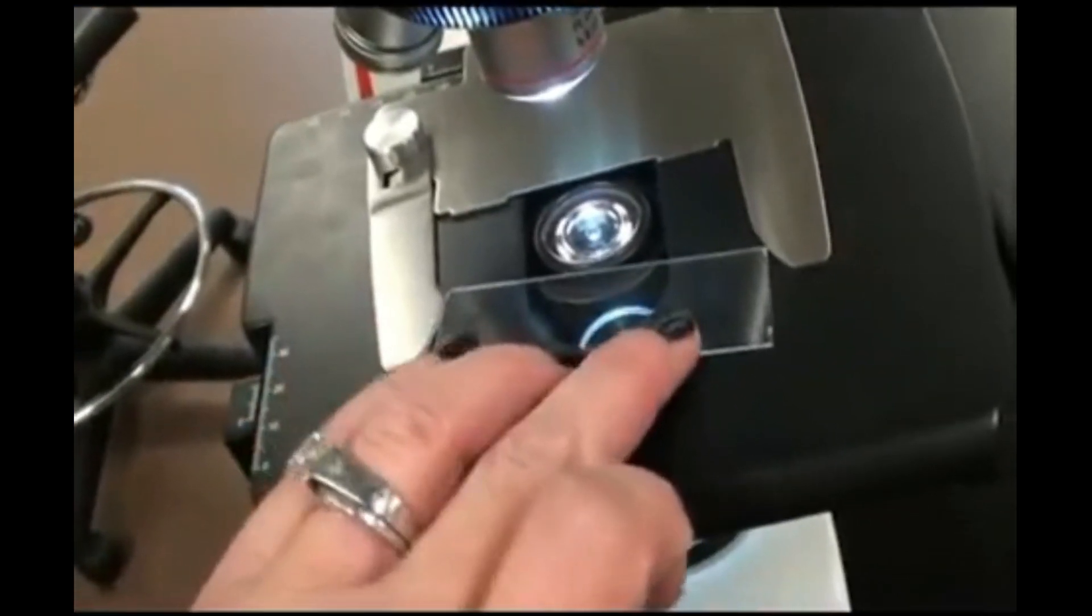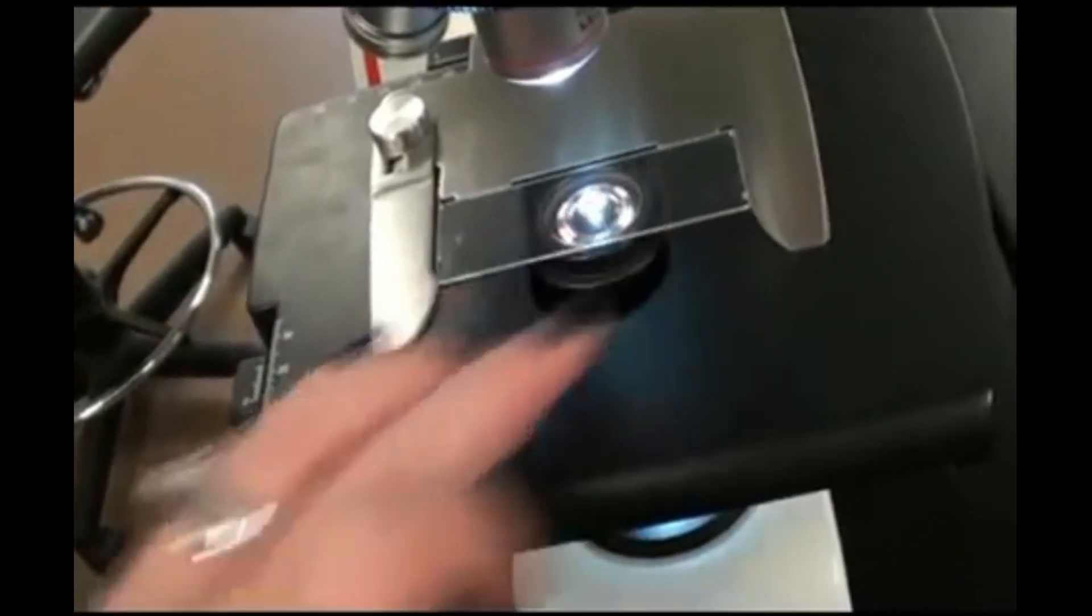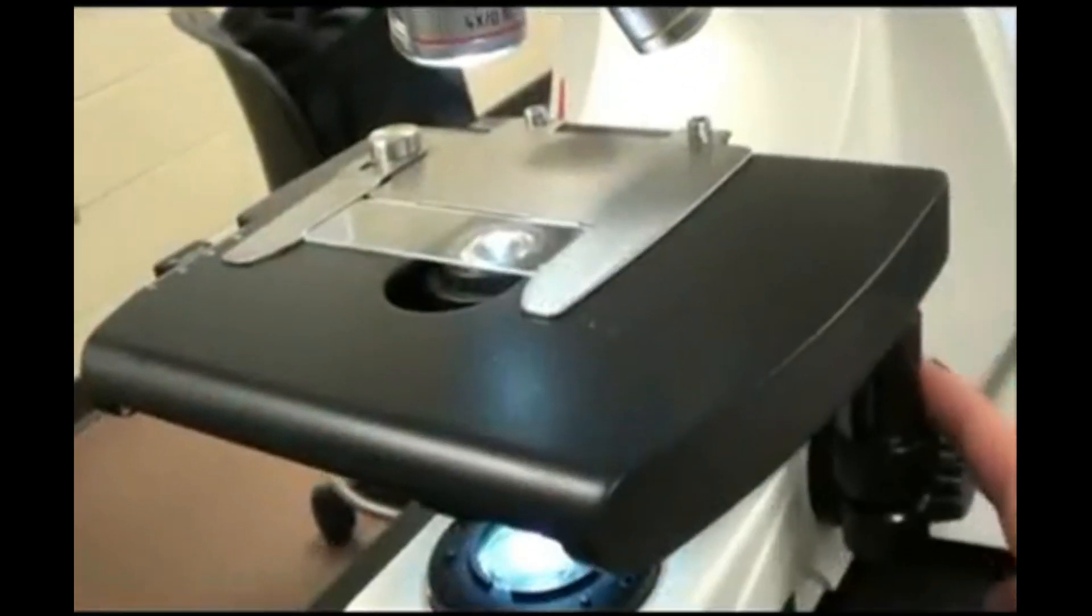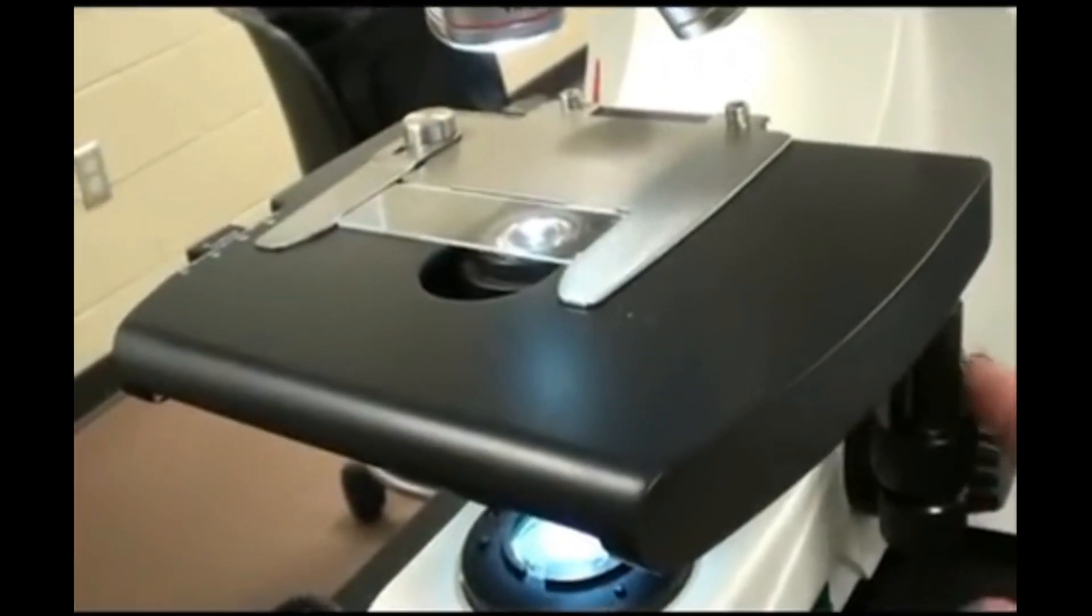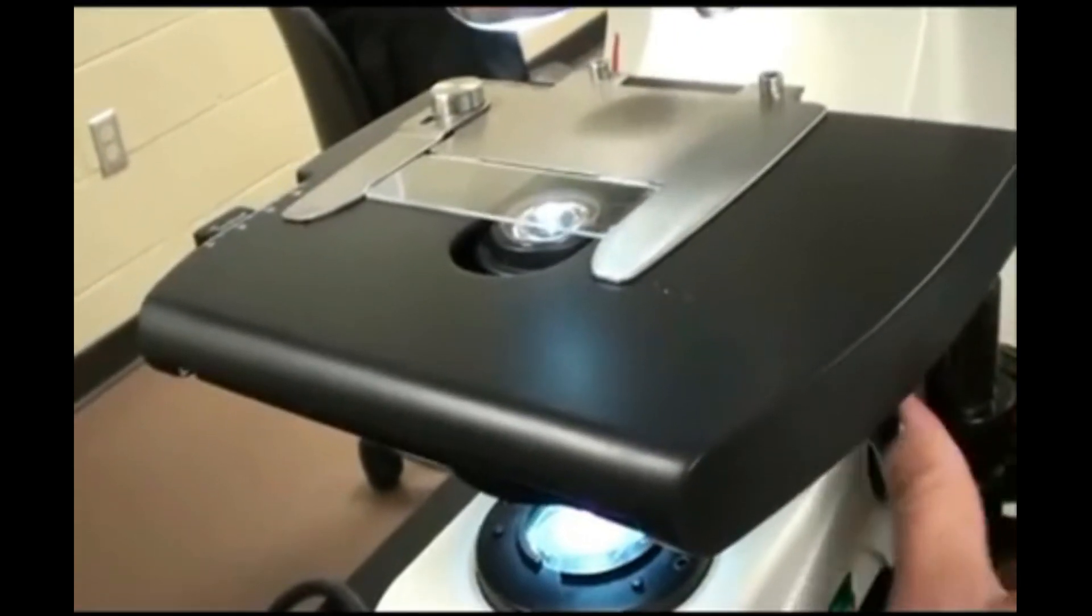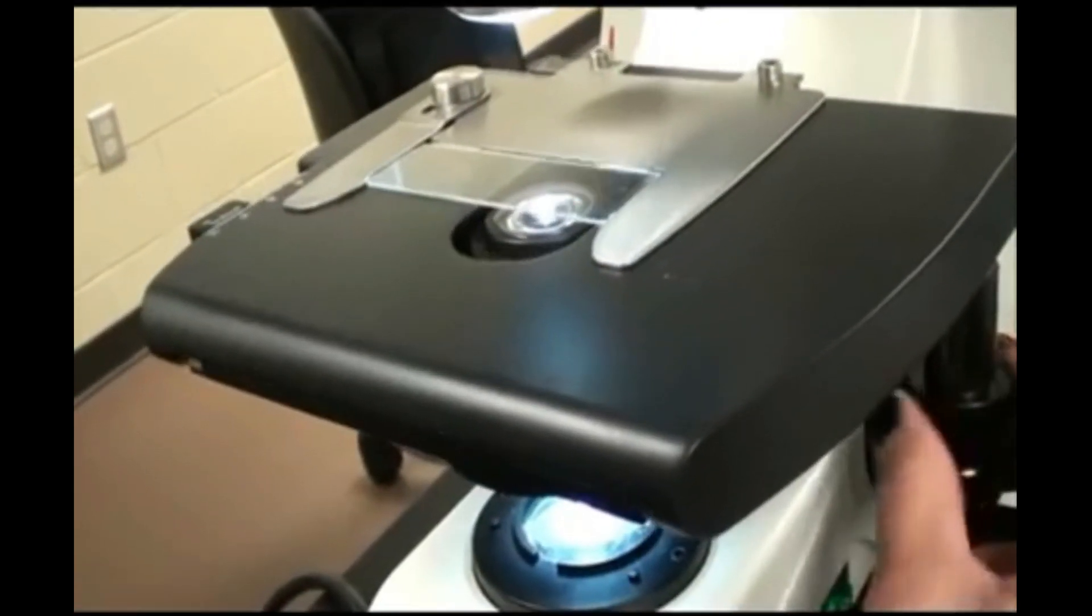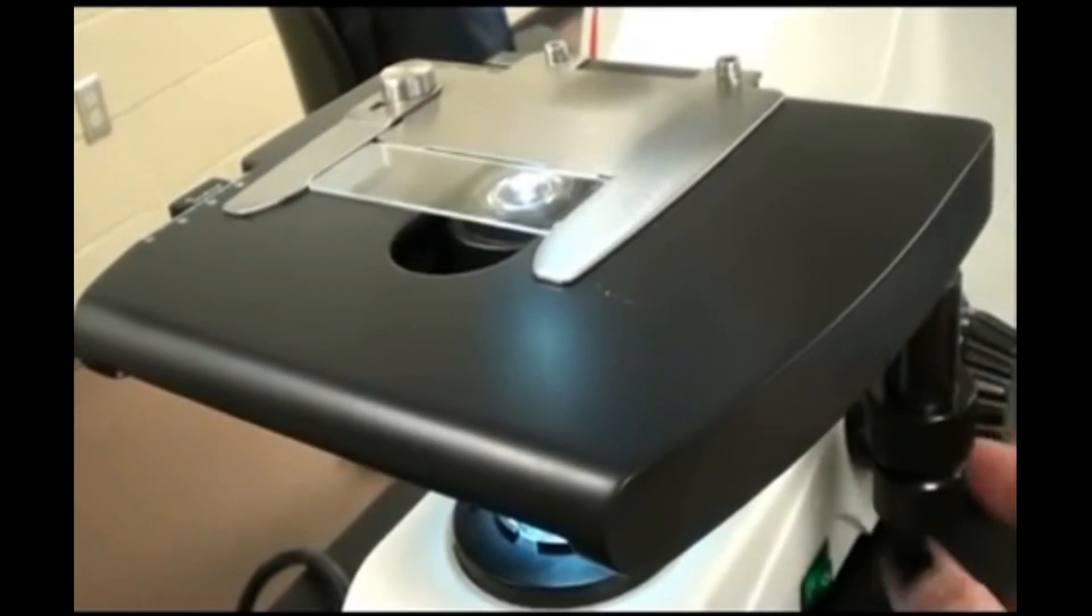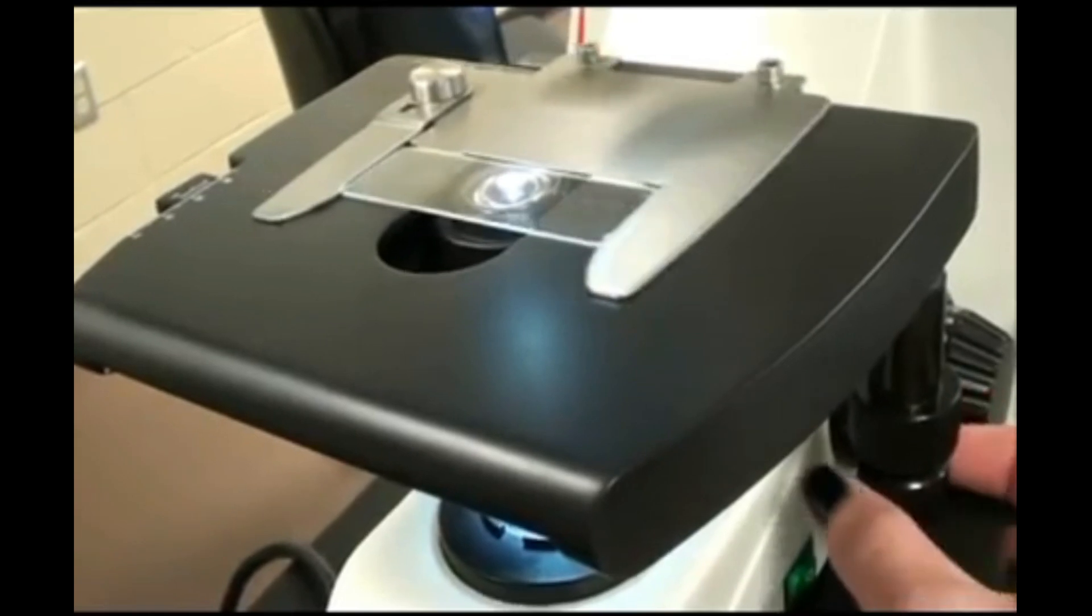A mechanical stage is a very handy feature to have on your scope. You can place your slide into the slide holder and then adjust the position of your slide using the coaxial adjustment knobs, usually hanging off the side of the stage. This way you can center your specimen very easily.